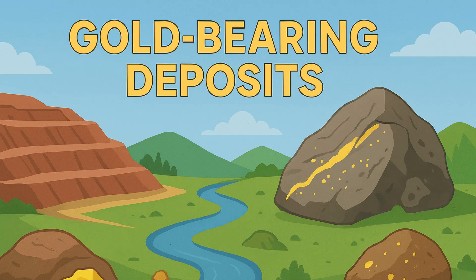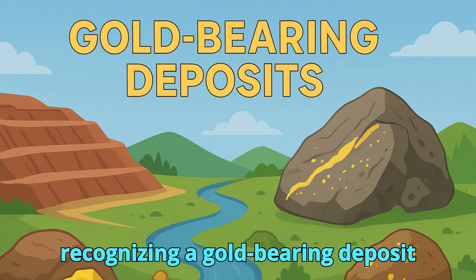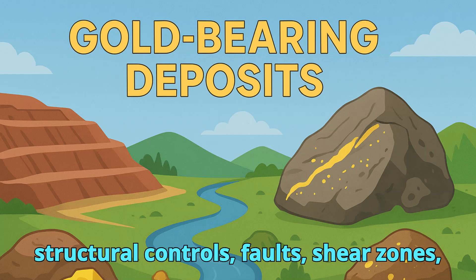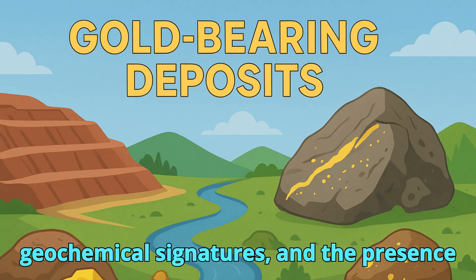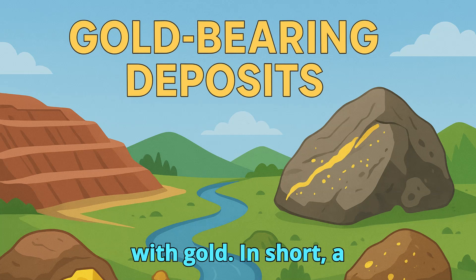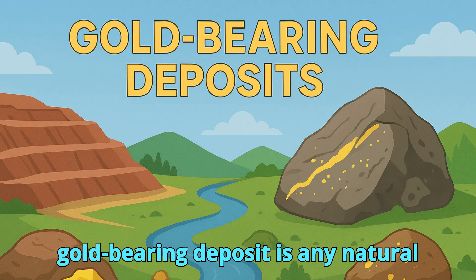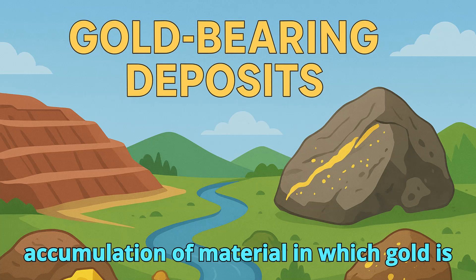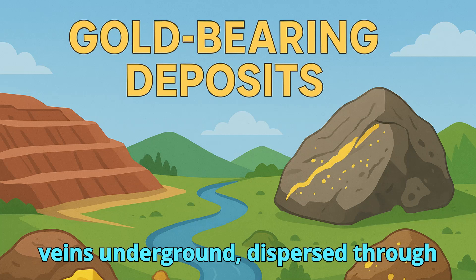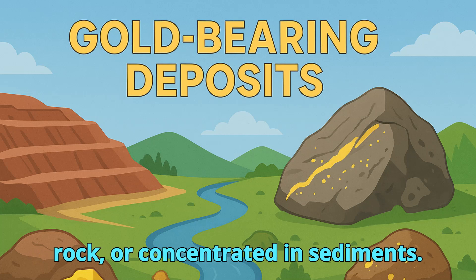In geology, recognizing a gold-bearing deposit involves studying the host rock type, structural controls such as faults and shear zones, geochemical signatures, and the presence of indicator minerals that often occur with gold. In short, a gold-bearing deposit is any natural accumulation of material in which gold is present in notable amounts, whether in veins underground, dispersed through rock, or concentrated in sediments.